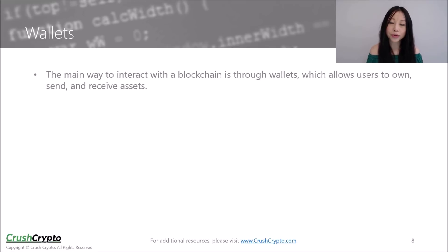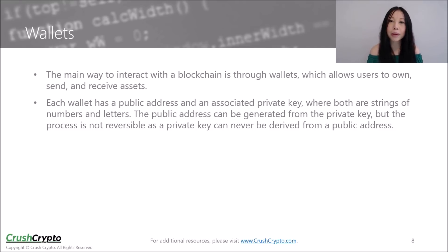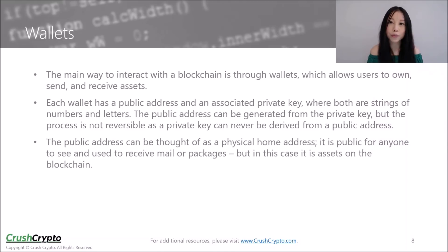The main way to interact with a blockchain is through wallets, which allows users to own, send, and receive assets. Each wallet has a public address and an associated private key, where both are strings of numbers and letters. The public address can be generated from the private key, but the process is not reversible — a private key can never be derived from a public address. The public address can be thought of as a physical home address: it is public for anyone to see and use to receive assets on the blockchain.